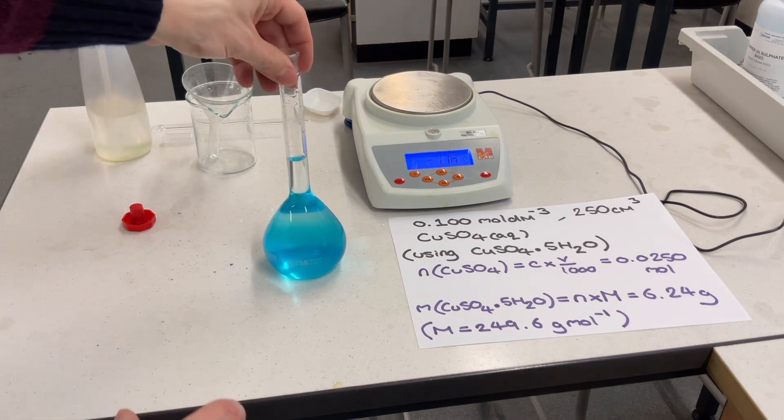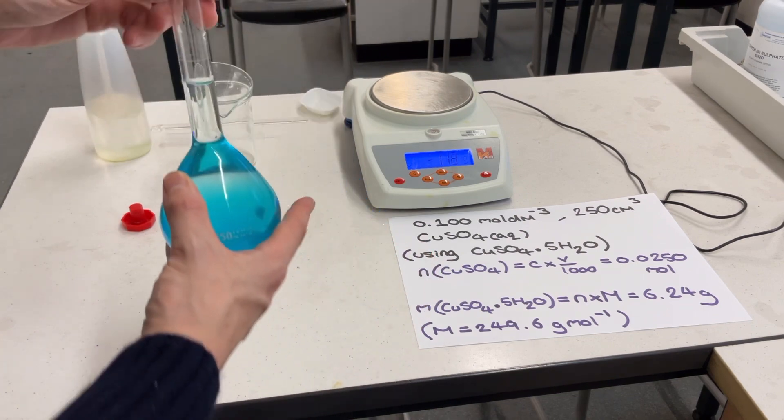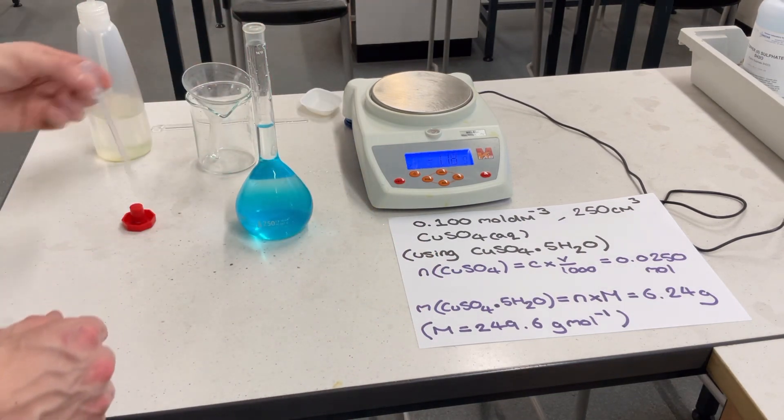Step 5: I now make up to the mark using deionized water so that the meniscus sits on the line on the neck of the flask. This is best achieved using a dropping pipette.